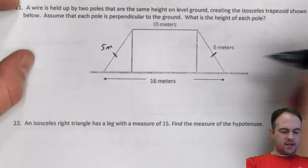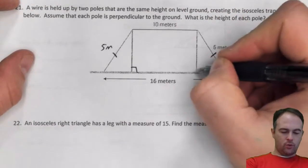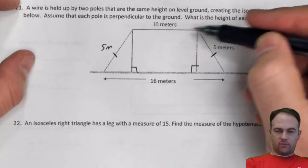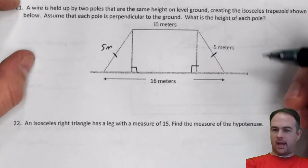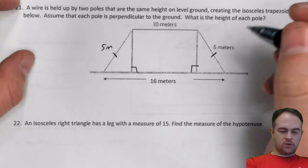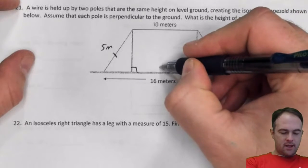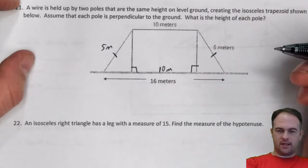It also says assume that each pole is perpendicular to the ground, so I can put my right angles there, meaning that this quadrilateral here is going to be a parallelogram. So we've got this is 10 meters, this piece here is also 10 meters.